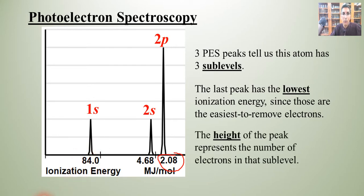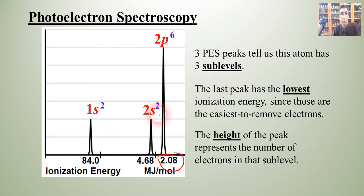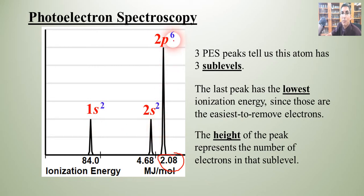The height of the peak represents the number of electrons in that sublevel. We remember that 1s has 2 electrons, so the height represents 2. The 2s has the same height, so it's also 2. The 2p peak is actually three times as tall as those other two peaks, meaning it has three times as many electrons — that's why we have 2p6.